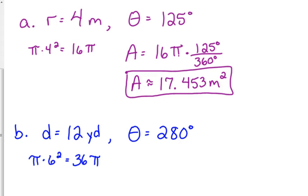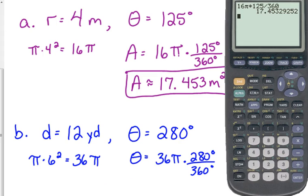So 36 pi is the area of our entire circle, but we're not talking about the whole circle. We're only talking about 280 degrees of it. So 36 pi times 280 over 360, and we just plug and chug.